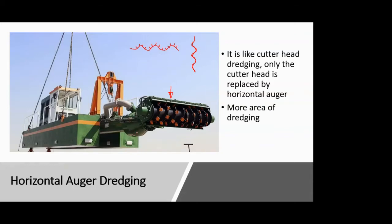The rest of the system is very similar to cutter head dredging: there is a ladder to which the horizontal auger is connected, and that ladder is lowered into the water body using a hoist or winch. Then the auger rotates, excavating the bed, and a suction pipe extracts all the excavated material and takes it to the surface. The only difference is that at the front you have a horizontal auger in place of a cutter head.